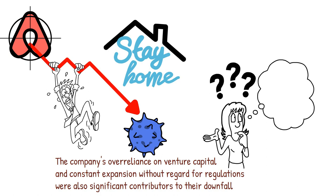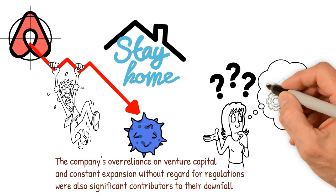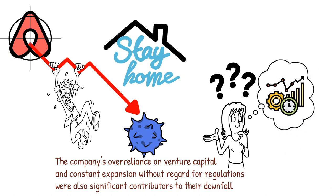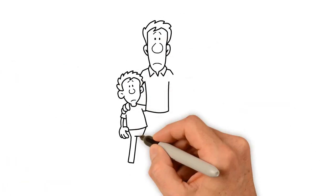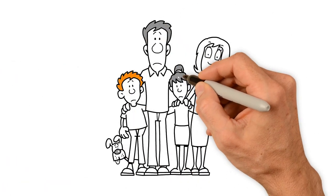The company's over-reliance on venture capital and constant expansion without regard for regulations were also significant contributors to their downfall. Remember how Airbnb used to be more efficient? Well, those days are long gone. The platform has become increasingly cluttered with unnecessary features, making it slower and cumbersome. Even more, the platform's dwindling state is causing more harm than good to hosts and guests alike.